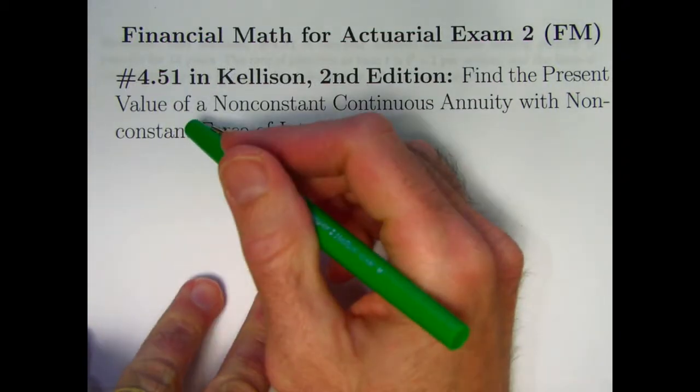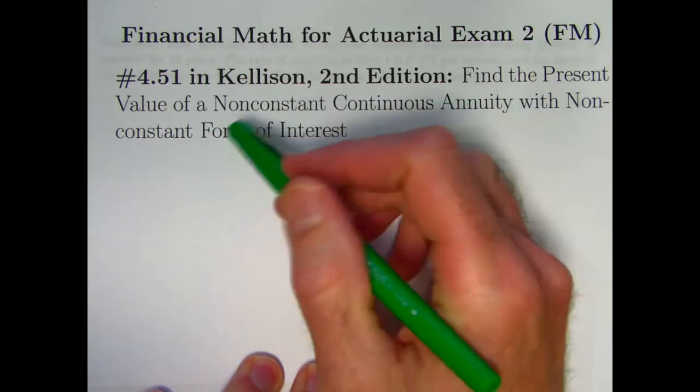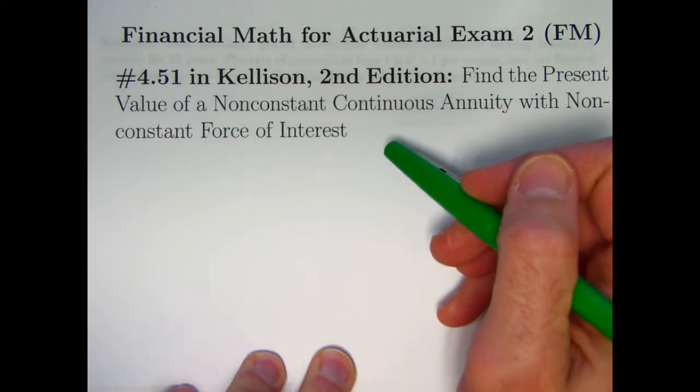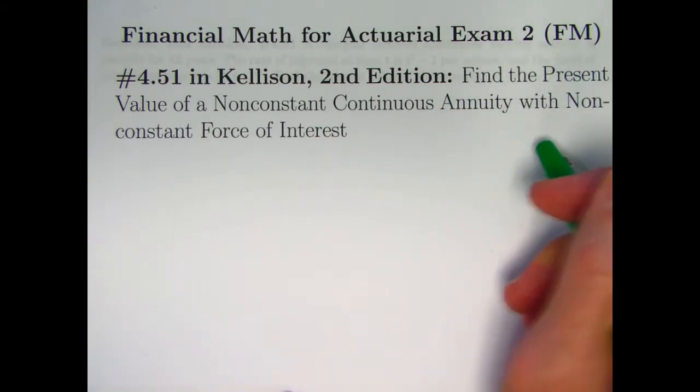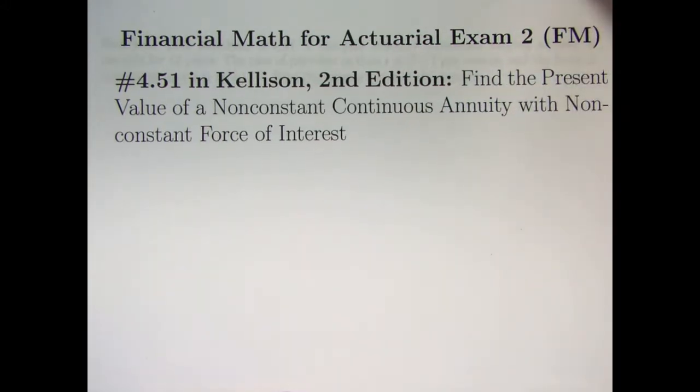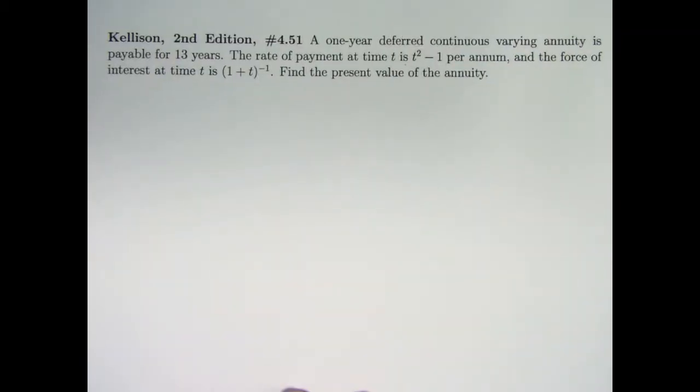In this video we'll be doing problem 4.51 in Kellison's book on the theory of interest. We'll be finding the present value of a non-constant continuous annuity, as we've been doing recently, but this time with a twist that we also have a non-constant force of interest, so the general formula really will be needed.